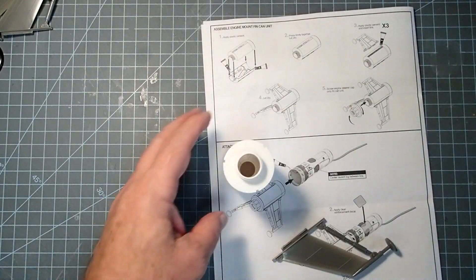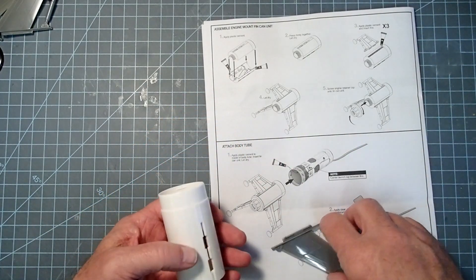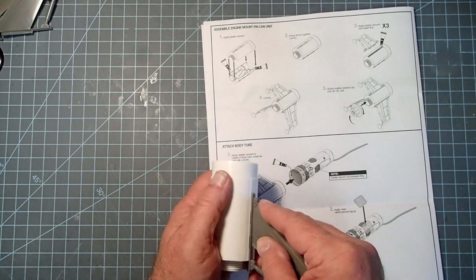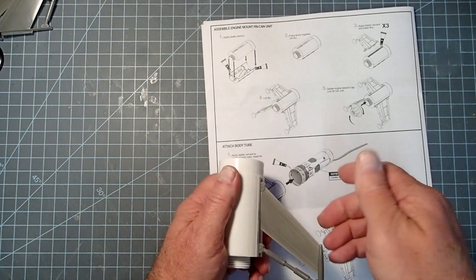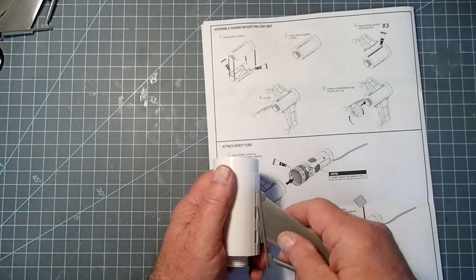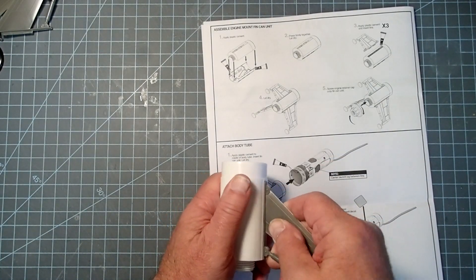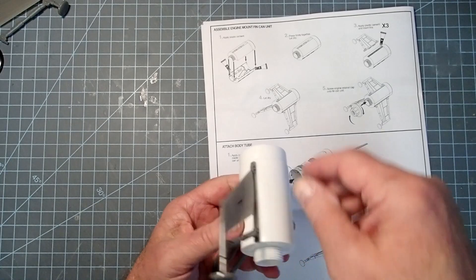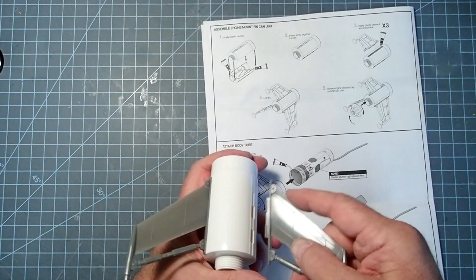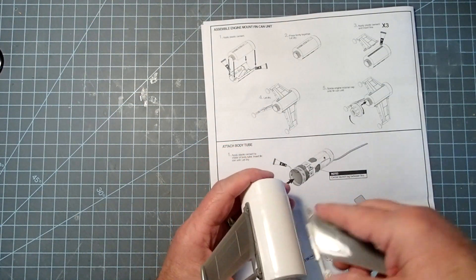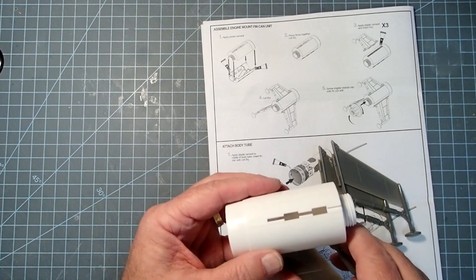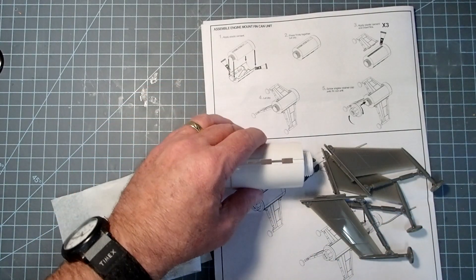Alright, we're ready to attach the fins. Now there's a tab here and that tab fits into this slot and then slides forward. And so the first thing you want to do before we actually glue any of this is just test fit them. They should be snug but not tight. So all those look good. Let me pop those back out again.